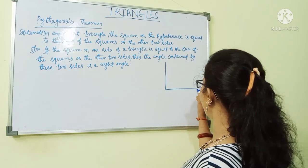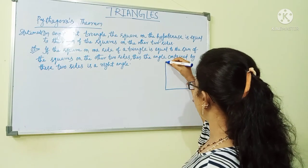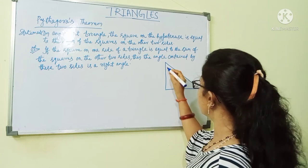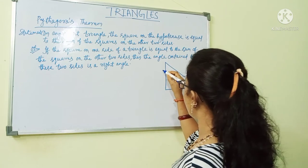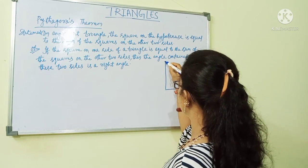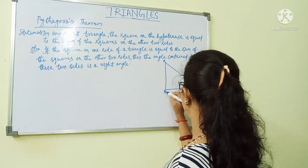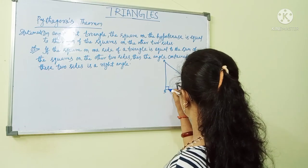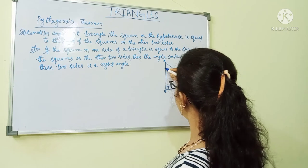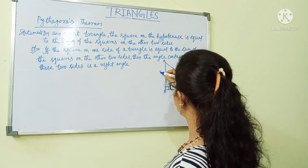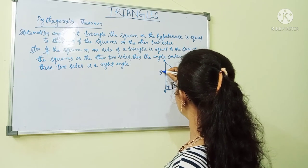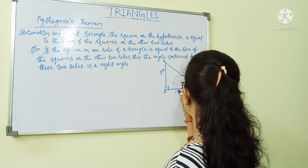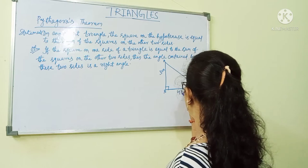If I draw one right-angled triangle, then I will consider its sides as A, B, C. And AB, I will take the measure of 3 cm, and BC the measure of 4 cm.